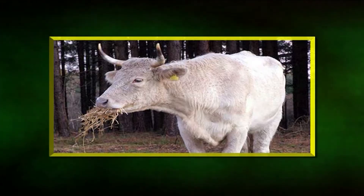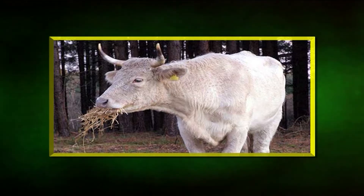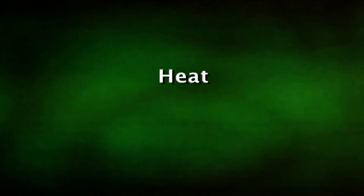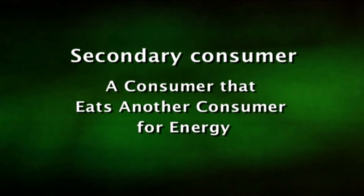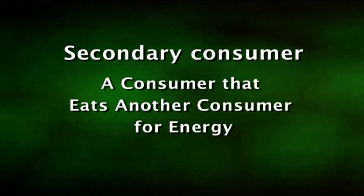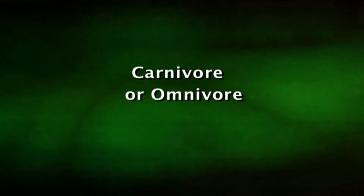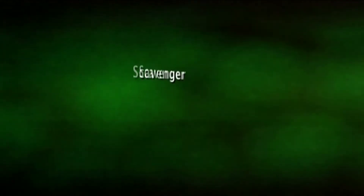Consumers that eat producers to get energy are first-order or primary consumers, also called herbivores or plant eaters. Most of the energy the primary consumer gets from the producer is used by the consumer. Some of the energy moves into the atmosphere as heat, while some energy in the primary consumer is stored and not lost to the atmosphere, and is available for another consumer. A consumer that eats another consumer for energy is called a secondary or second-order consumer, which may be a carnivore or an omnivore, or a predator or scavenger.